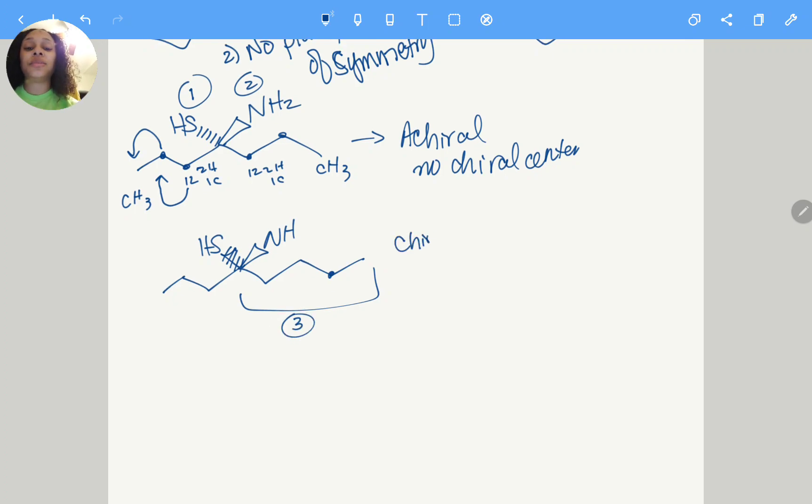This molecule would be chiral because it has a chiral center and the molecule has no plane of symmetry, no plane or axis of symmetry.